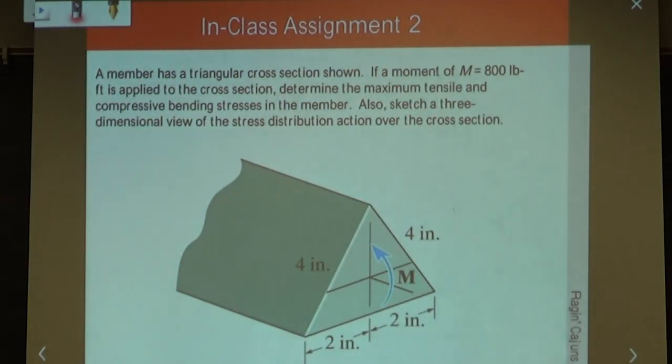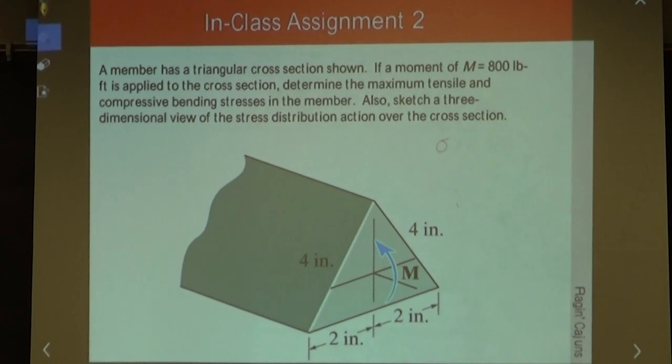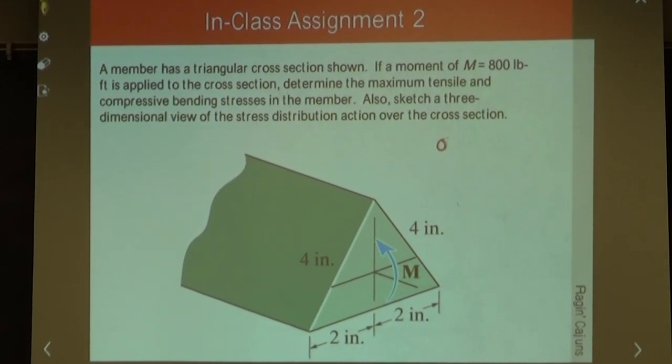This is another problem that I want you to work on your own. Sigma max in tension equals 2.4 KSI. Sigma max in compression is 4.8 KSI. Where would tension and compression be? At the bottom, at the top, where would each one be? I'll let you figure that out.